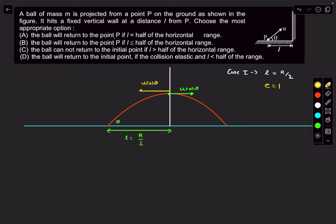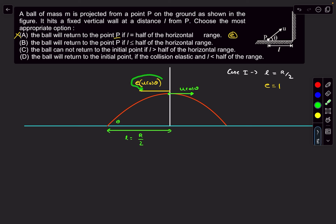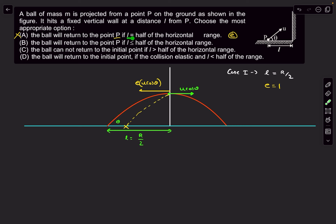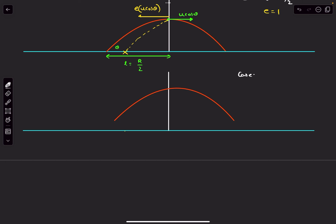So if l = R/2 and the collision is elastic, the ball returns to P. Option A says the ball returns if l is half the horizontal range, but it doesn't mention the coefficient of restitution. If the collision is not elastic, the rebound velocity becomes e·u cos θ — the horizontal velocity decreases, so the ball won't reach P but falls in front of it. Option A is wrong as a general statement.